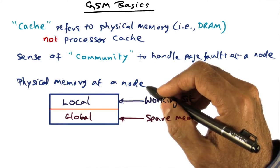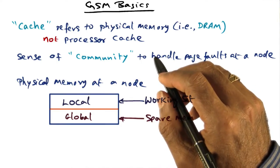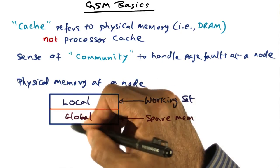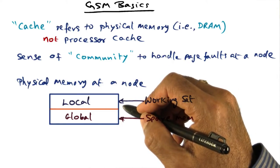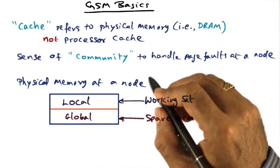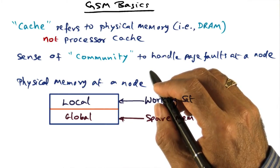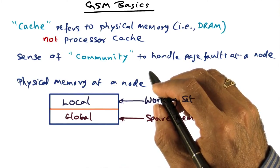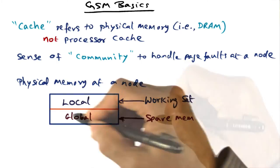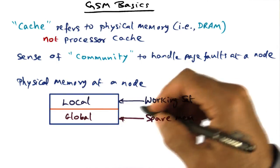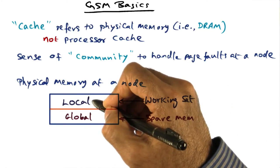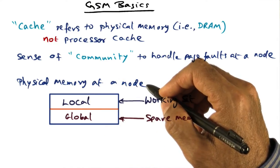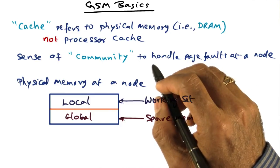So we have two states for a particular page. It could be private, or it could be shared. If a page is in the global part of my physical memory, then it is guaranteed to be private because the global part is nothing different from a disk. So when I swap out something, I throw it onto the disk. Similarly, when I swap out something in GMS, I throw it into my peer memory's global cache. And therefore, what is in the global cache is always going to be private copies of pages, whereas what is in the local part can be private or can be shared, depending on whether that particular page is being actively shared by more than one node at a time.